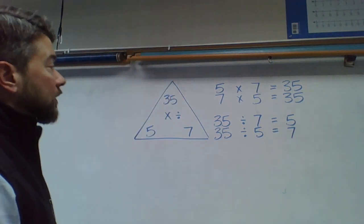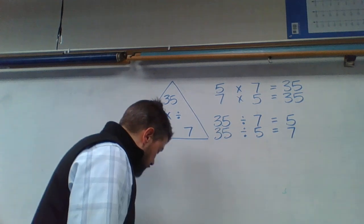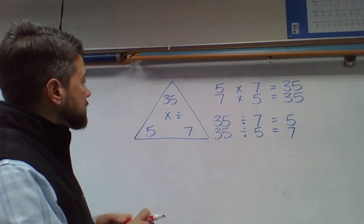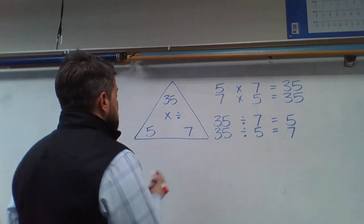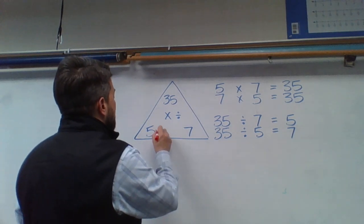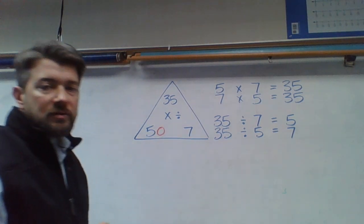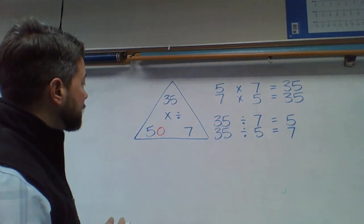When I extend a multiplication fact, all I do is add a 0 to one of the factors, or multiply that factor by 10. So let's say, for example, I multiply 5 times 10. That's going to give me a new factor of 50.